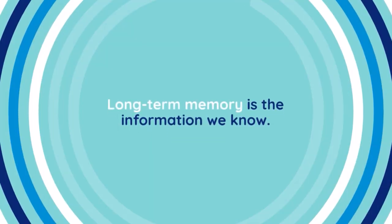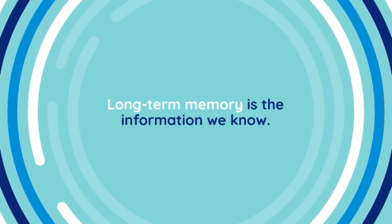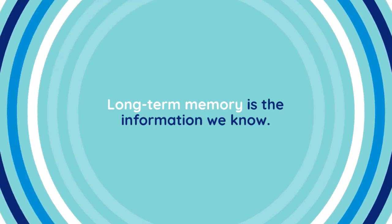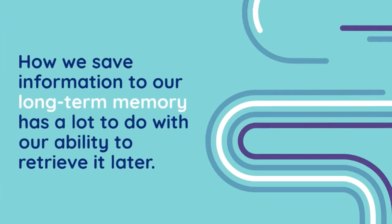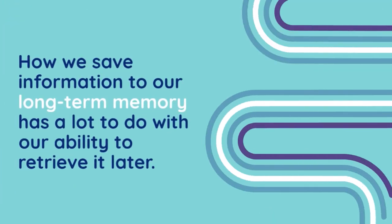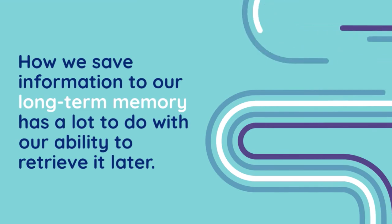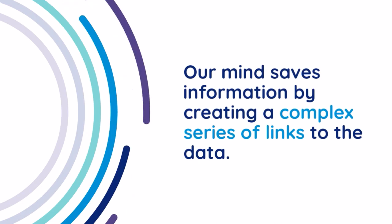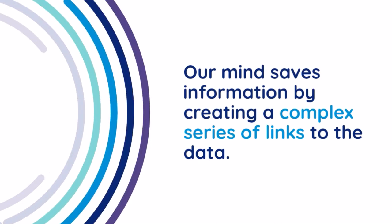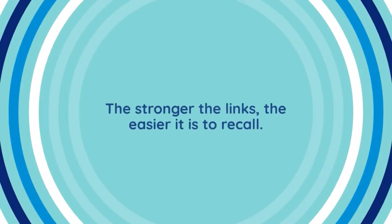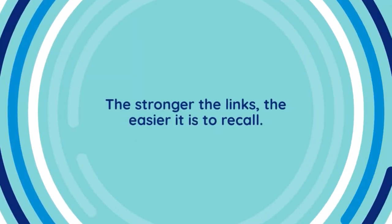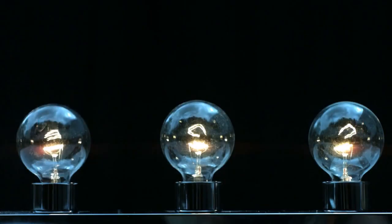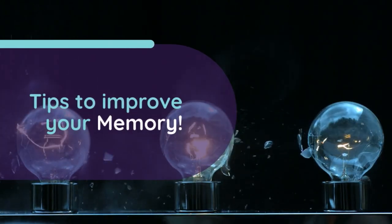Long-term memory is the information we know. How we save information to our long-term memory has a lot to do with our ability to retrieve it later. Our mind saves information by creating a complex series of links to the data. The stronger the links, the easier it is to recall.